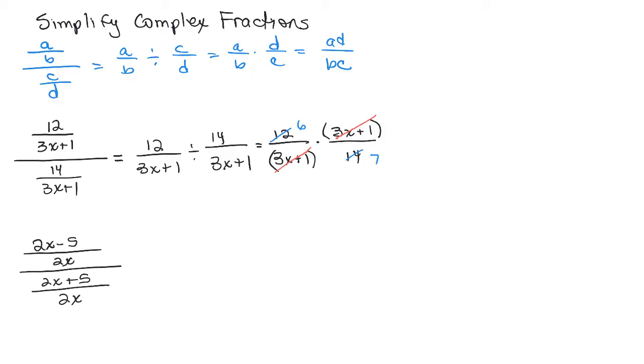And I didn't write this down. When I cancel the 3X plus 1 and 3X plus 1, there's really one left, right? So we have 6 times 1 in the numerator, which is 6, and 1 times 7 in the denominator. So this simplifies to 6 7ths.